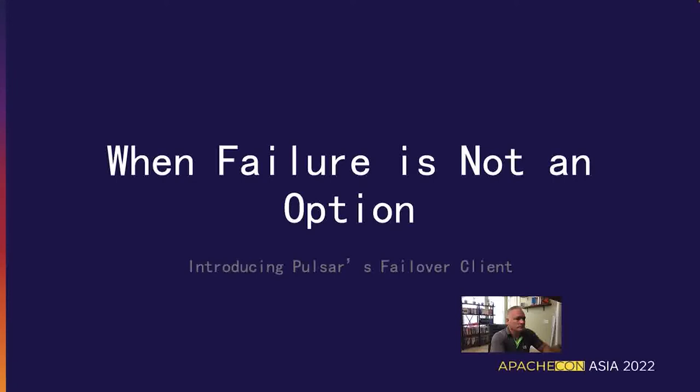Developing a continuously available application requires more than just utilizing fault-tolerant services such as Apache Pulsar in your software stack. It also requires immediate failure detection and resolution, including built-in failover when there are data center outages. Up until now, Pulsar clients could only interact with a single Pulsar cluster and were unable to detect and respond to a cluster-level failure event. In the event of a complete cluster failure, these clients cannot reroute their messages to a secondary or standby cluster automatically. This can lead to application failure, which for many is not an option.